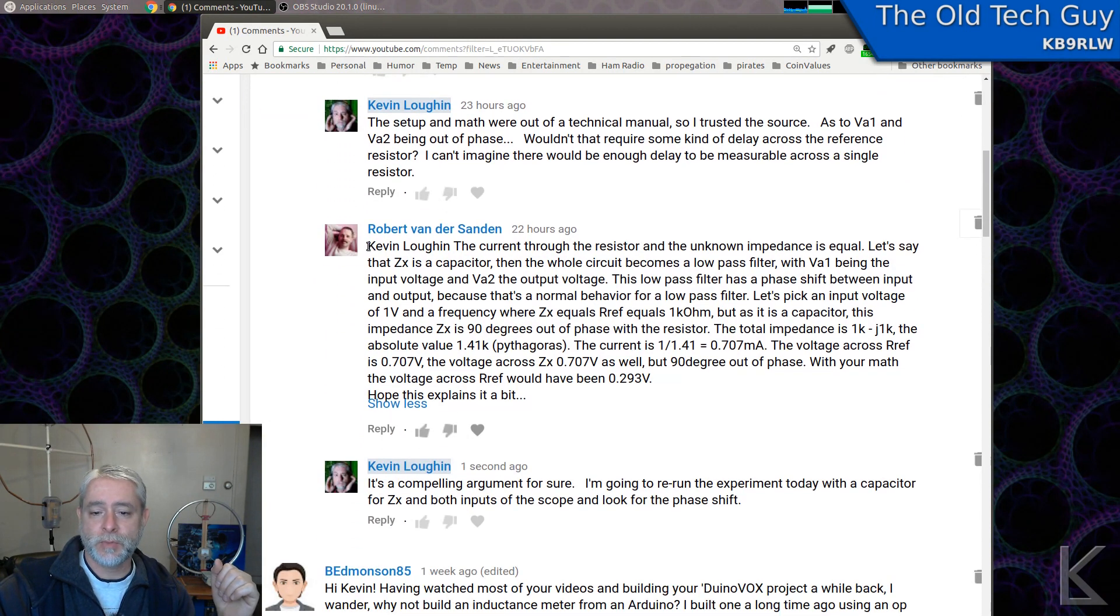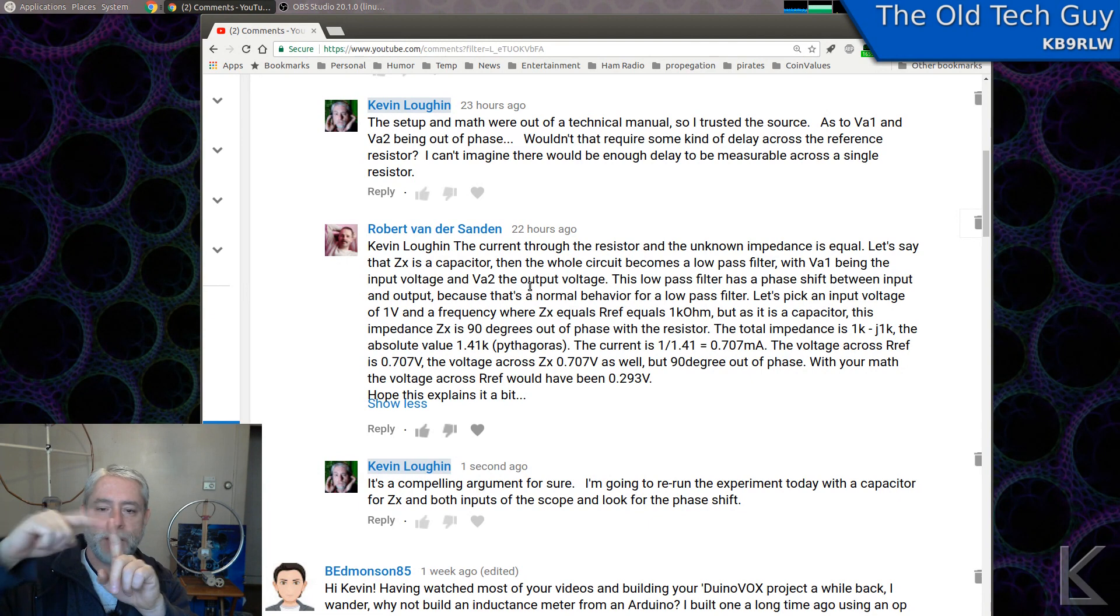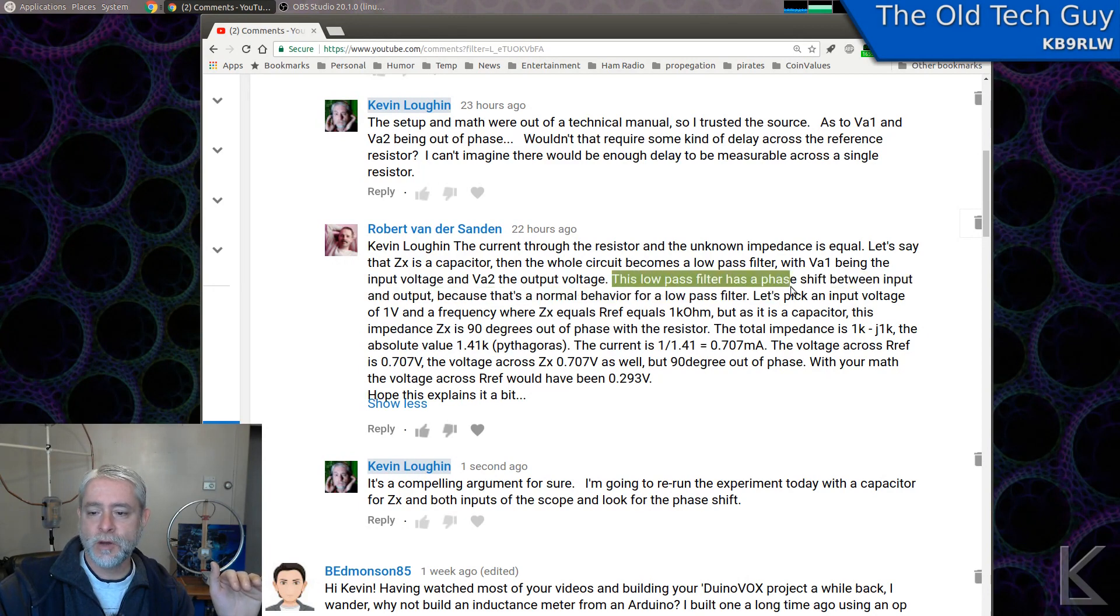But Robert went on to explain it mathematically. The current through the resistor and unknown impedance is equal. Let's say that ZX is a capacitor. Then the whole circuit becomes a low-pass filter. With VA1 being the input voltage and VA2 being the output voltage. I guess I could kind of see that because you've got a resistor coming in, you've got a capacitor to ground. So you've got an RC time constant and that would make this point kind of the output. This low-pass filter has a phase shift between the input and output because that's normal behavior for a low-pass filter.